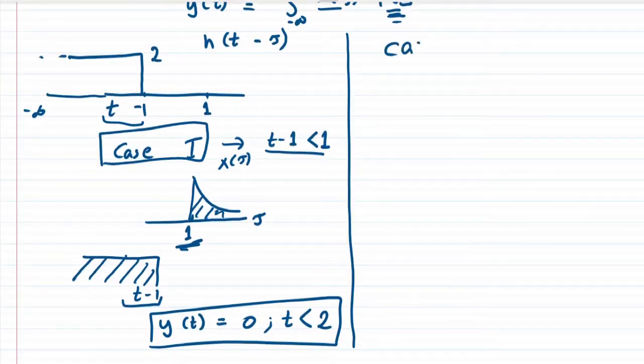In case 2, we have x(τ) starting at 1 and exponentially decaying. In the meanwhile we have the impulse response h(t-τ) which we have flipped, and in the second case the terminal point t minus 1 is beyond 1.